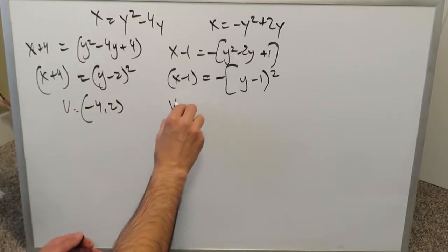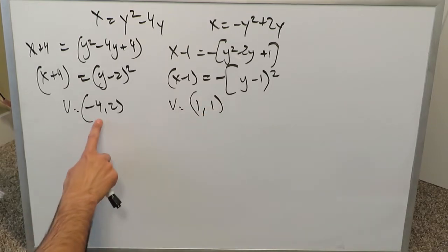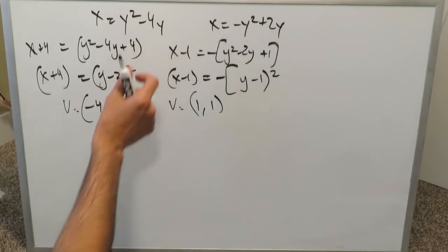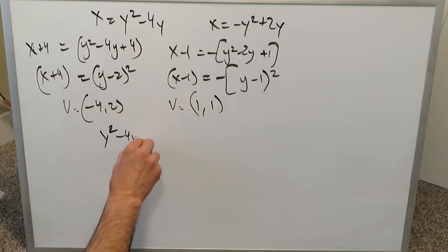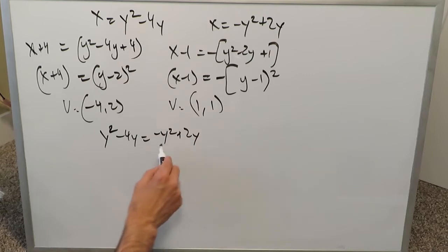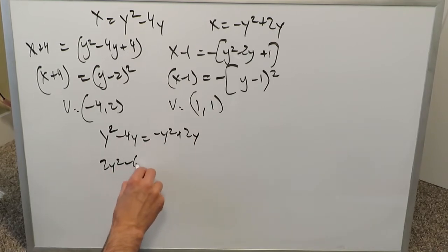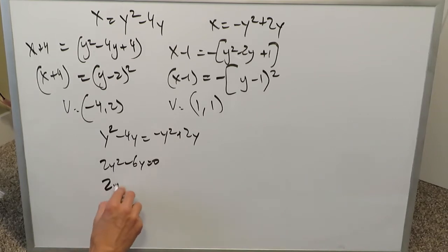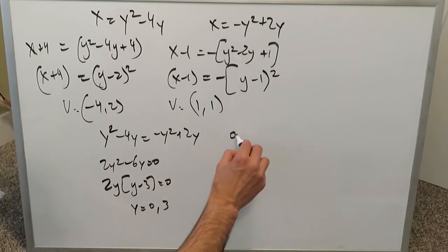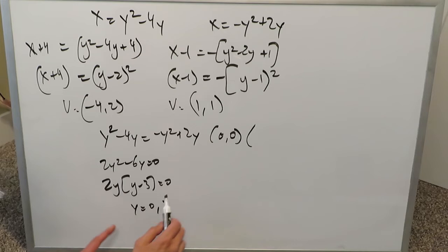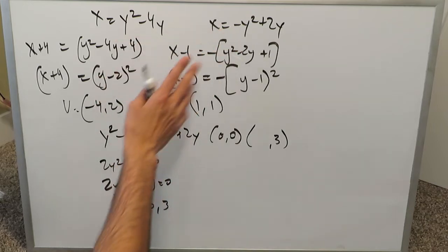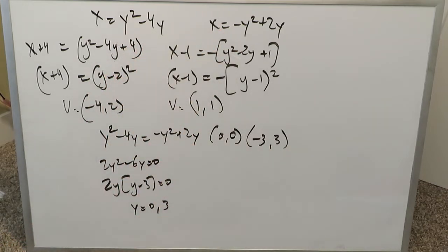Bringing everything to one side: 2y² − 6y = 0, so 2y(y − 3) = 0, giving y = 0 or y = 3. When y = 0, x = 0 (the origin). When y = 3, plugging into either equation gives x = 9 − 12 = −3. So the intersection points are (0, 0) and (−3, 3), and our interval along the y-direction is [0, 3].